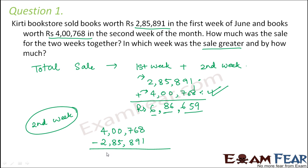So when you subtract this, what you get is 1 lakh, 14,877. So the second week's sale was greater than the first week's sale by rupees 1 lakh, 14,877.